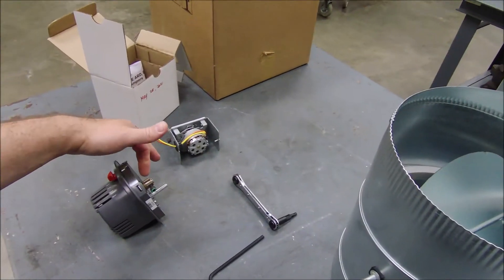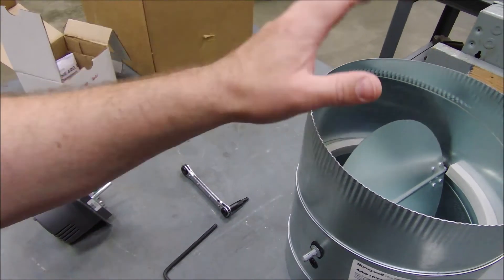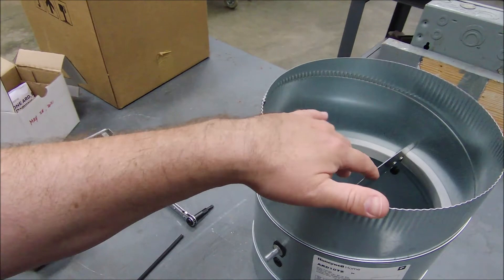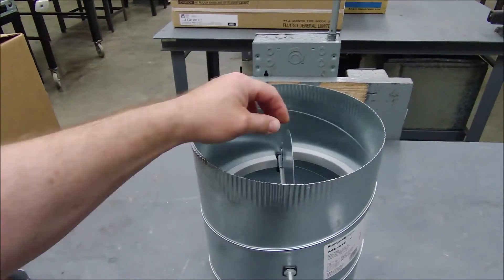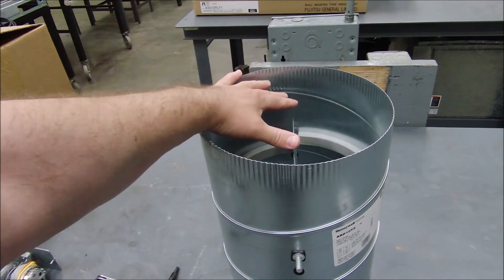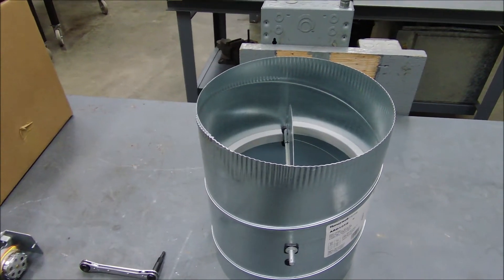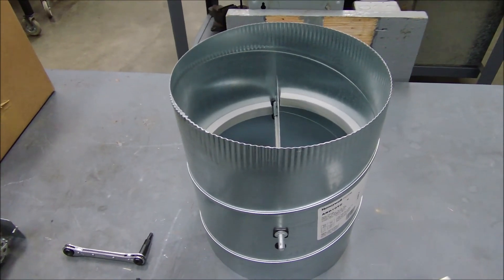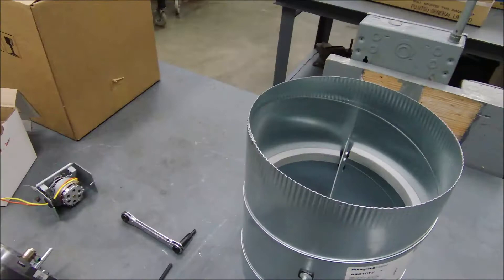If that damper was closed or halfway when you adjust that set screw for the new actuator, once you replace it, if you don't have that damper all the way open then you're going to have some airflow issues. What you got to do is make sure that you position that blade of that damper where it's in the open position. You can go ahead and cut the unit off if you want so there's no airflow that would mess it up.